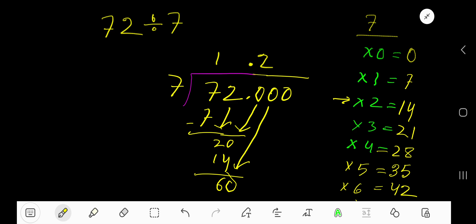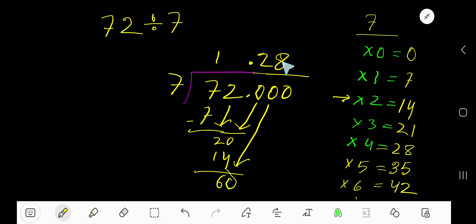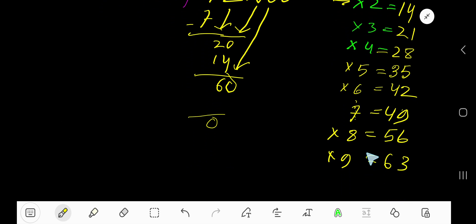Write 8. 8 times 7 is 56. Subtract to get 4. Bring down the next 0. You can add more zeros, so we have 40.